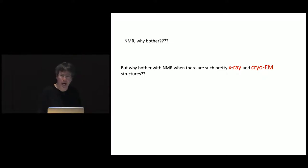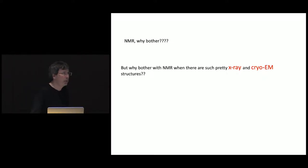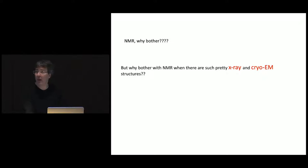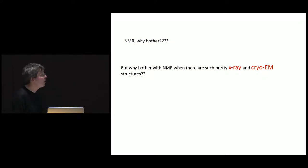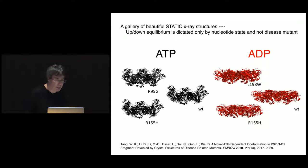We've also assigned something like 80% of the methyl positions in spectra recorded of the ATP form of this protein. But the question I want to ask is: why should we bother with NMR spectroscopy? I've shown you beautiful structures produced by X-ray crystallography, and with the development of cryo-EM there are even more beautiful pictures. So why bother with NMR when there are such pretty pictures from X-ray and cryo-EM?